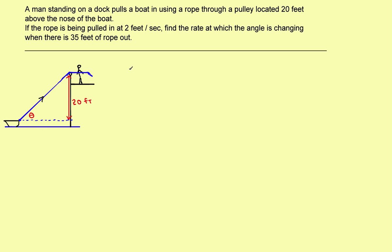As in the previous problems, you're going to want to label all the things you know and the things that you don't know. In this problem, the man is pulling this rope in this direction at the rate of two feet per second. I'm going to call that distance S — the length of the rope that's out, the slant distance. The man is pulling in at two feet per second, so the rate at which S is changing, or ds/dt, would be equal to two feet per second.